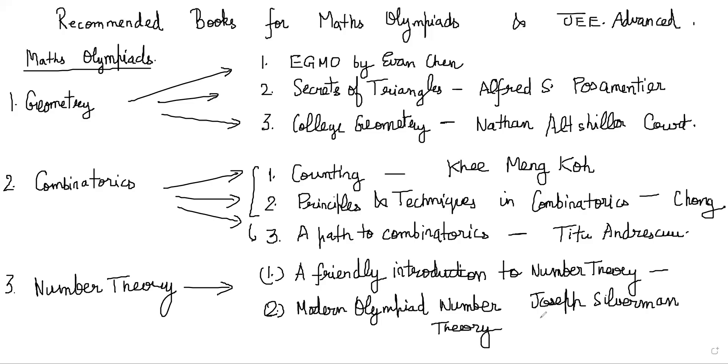And finally, Number Theory: Structures and Problems by Titu Andreescu. So the third book for number theory is Structure and Problems by Andreescu. This is also a slightly advanced book. You should go through Silverman and Modern Olympiad Number Theory before you try to attempt this. Slightly harder here.